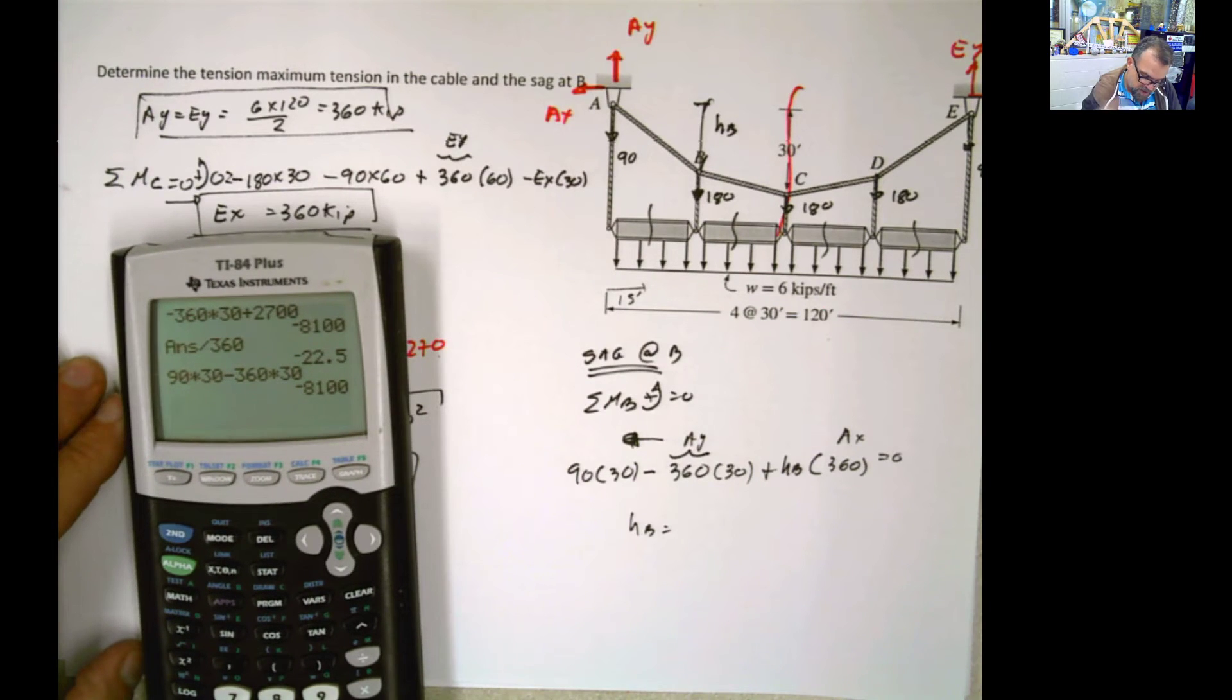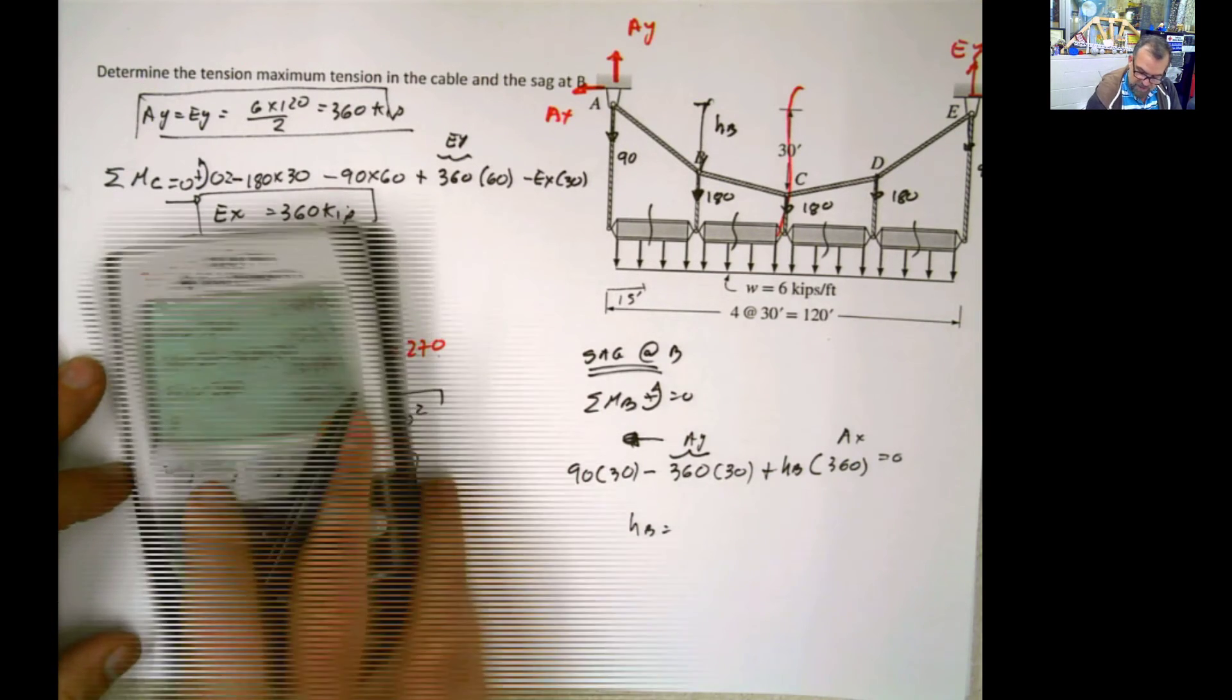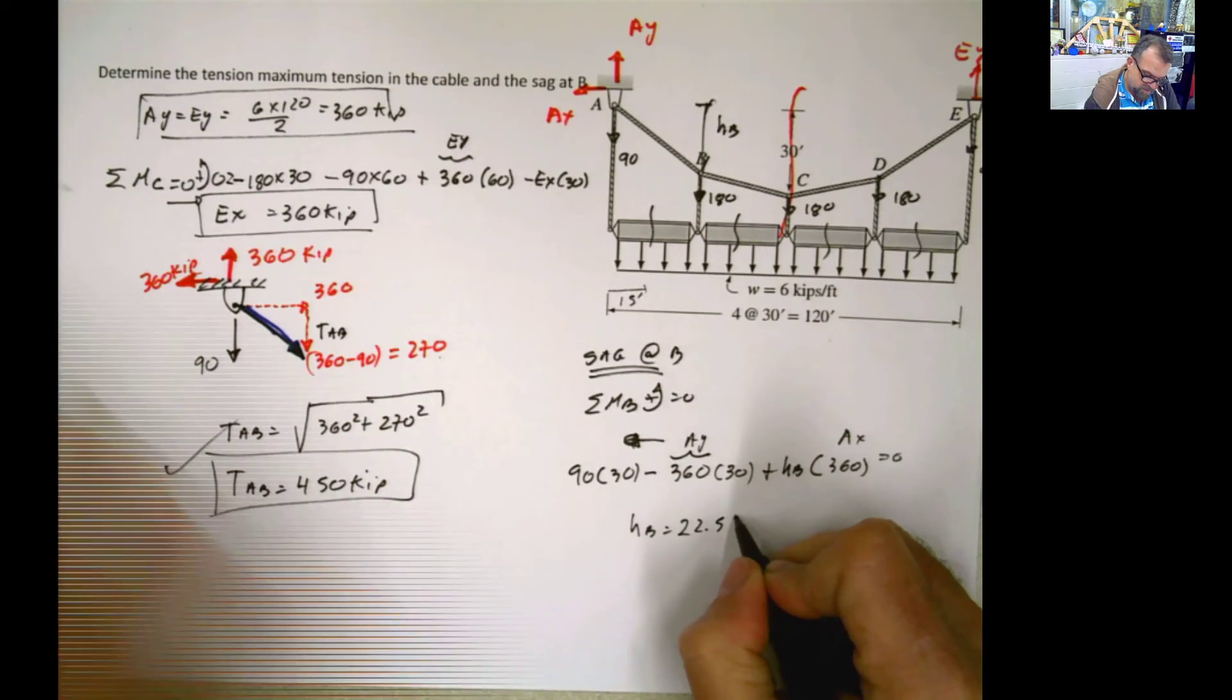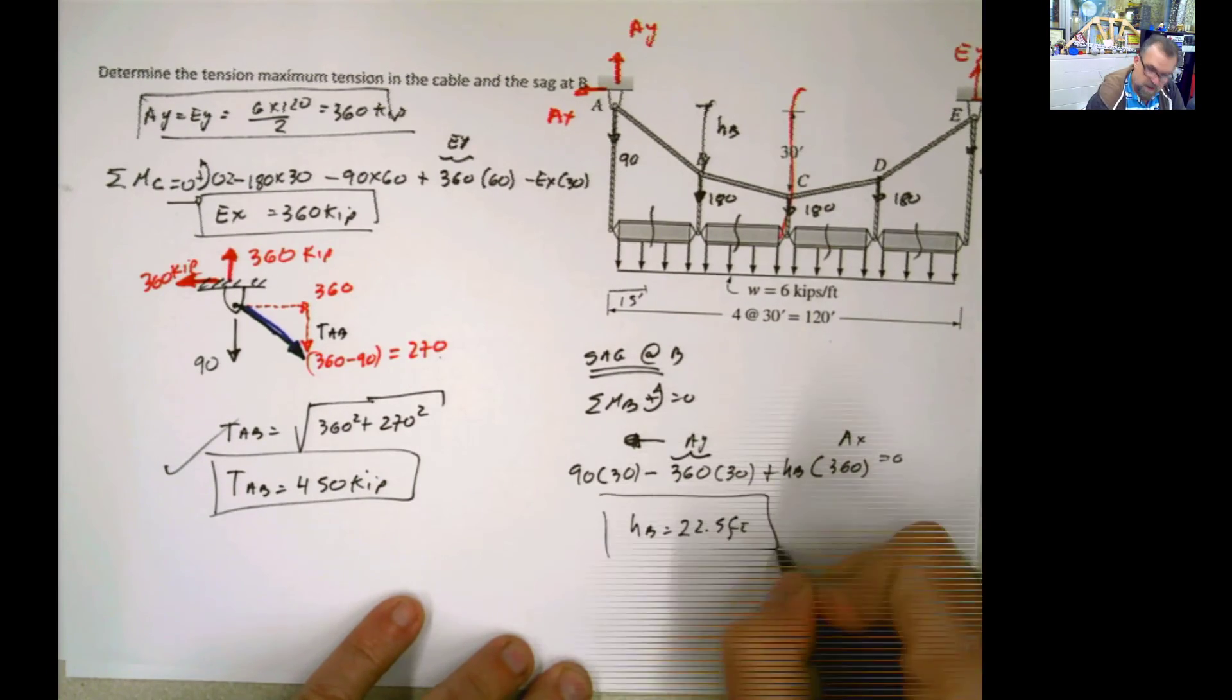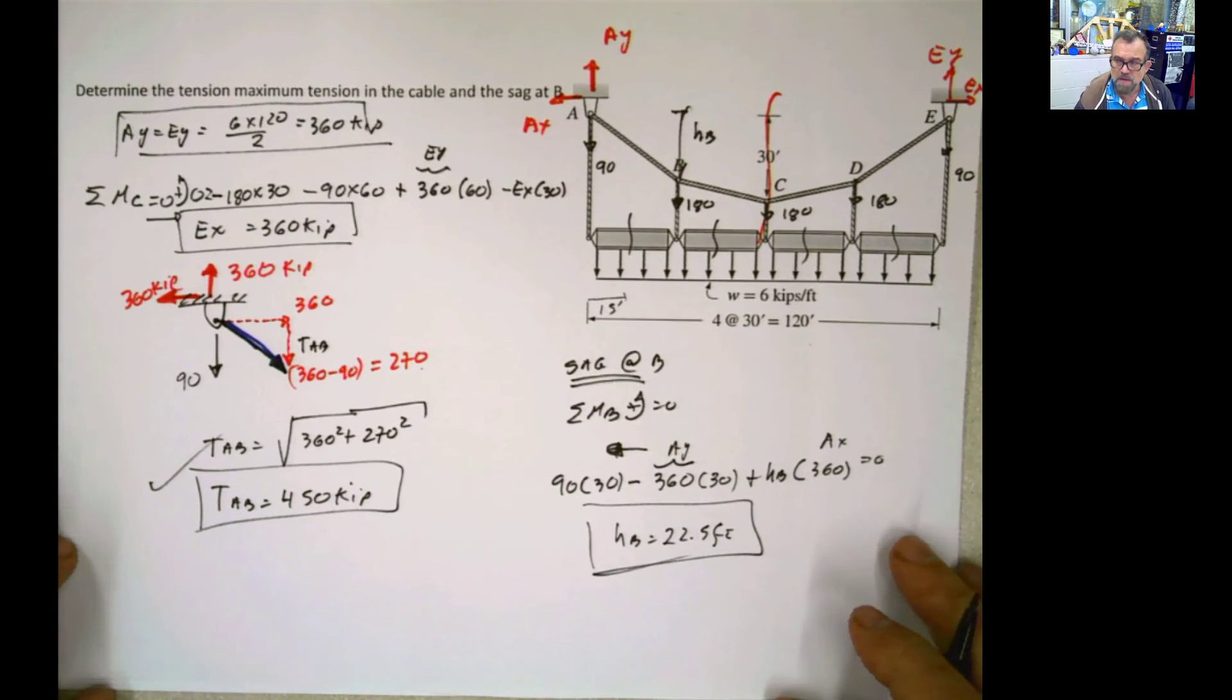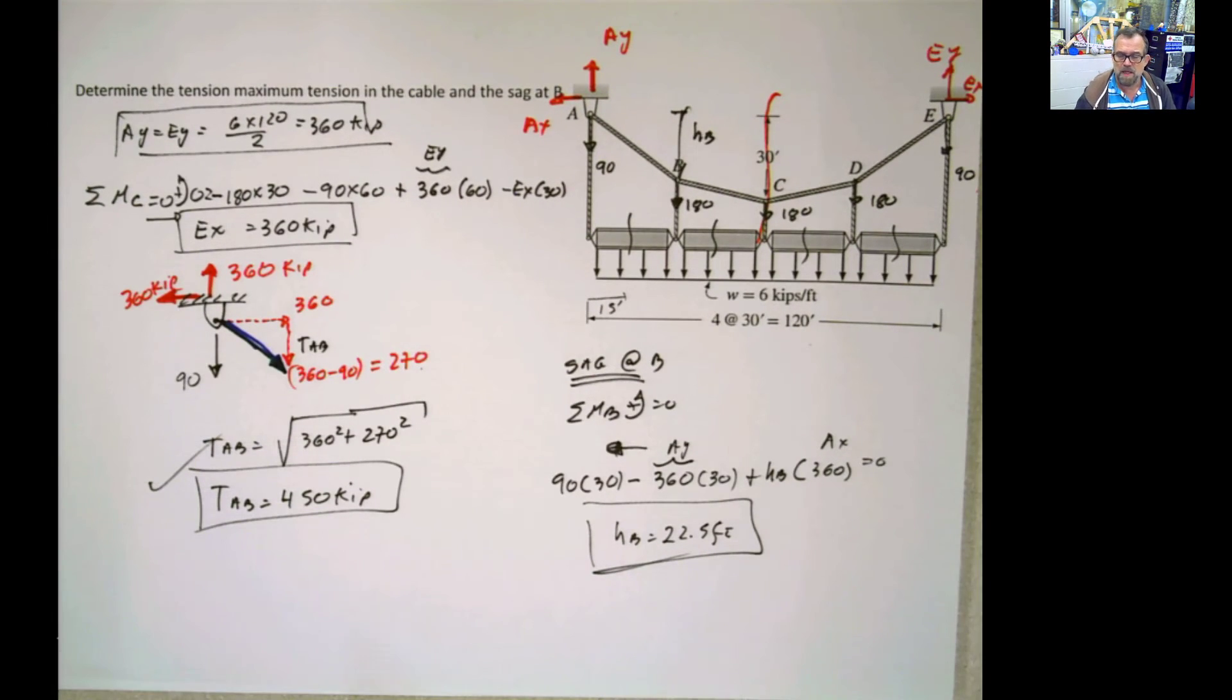And HB is going to be 90 times 30 minus 360 times 30 is 8,100. Pass it to the other side. It's going to be positive divided by 360, 22.5, 22.5 feet. And that concludes this simple but at the same time tricky cable problem.